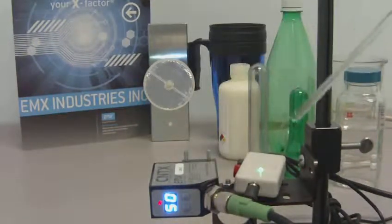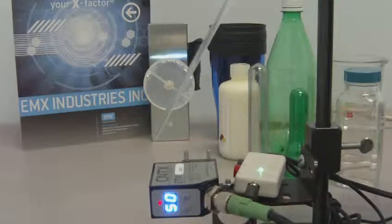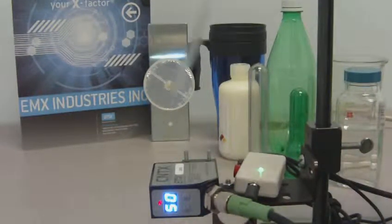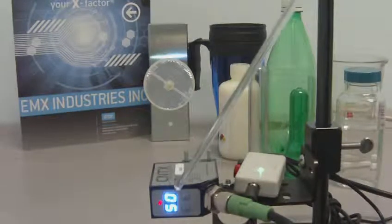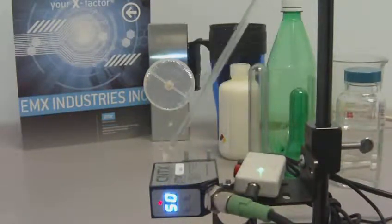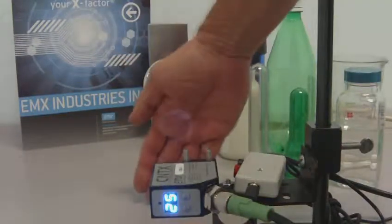This is a demonstration of the EMX model CNTX-30-0 contrast sensor from EMX Industries. The sensor features a display of 0 to 50, which indicates the strength of the reflected signal from the target.